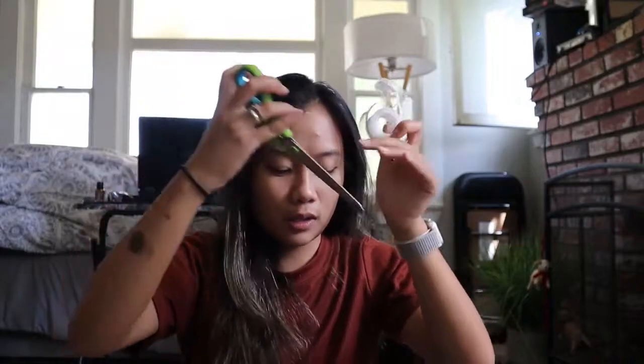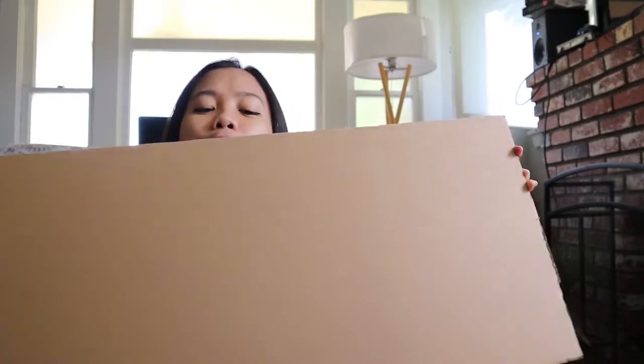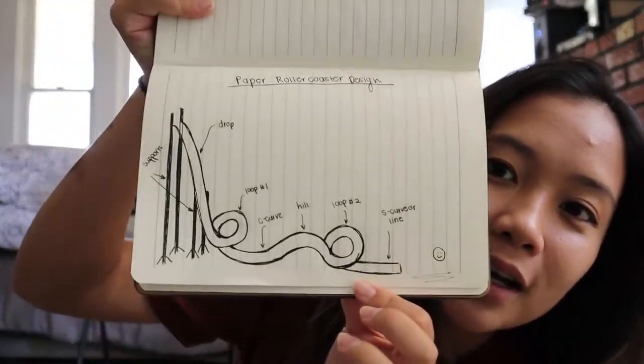All right guys, so we're gonna start our own version of the paper roller coaster activity. I have here some mixture of the templates that I printed out. As you can see, my printer stopped working partway, so we'll make do with that. I got some tape, scissors, and this cardboard piece that I found, and we're gonna be following this beautiful hand-drawn design. So let's go ahead and get started.